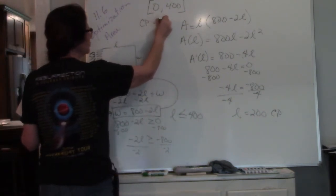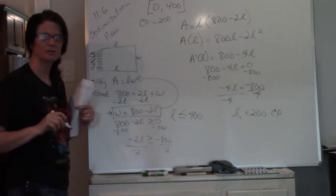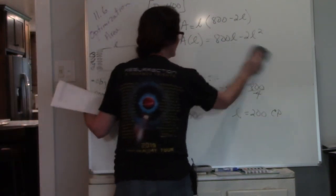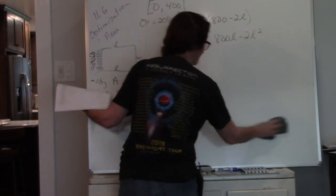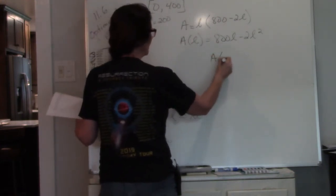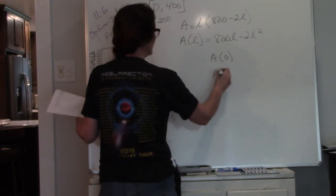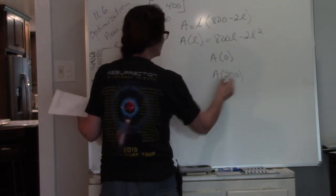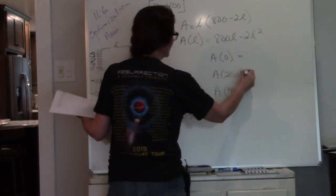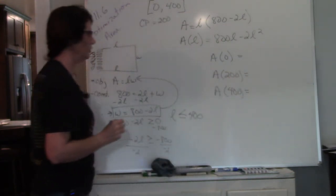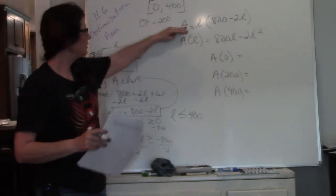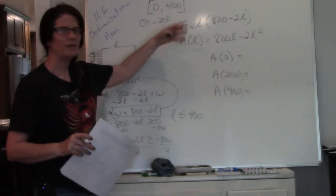What I just found is my critical point. So I have my endpoint and I have a critical point of 200. Now I can plug those three values back into my original function: A at 0, A at 200, and area when L is 400. Find the derivative.